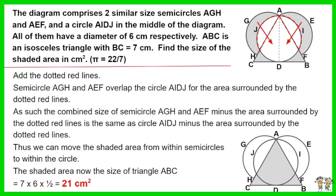Thus we can move the shaded area from within semicircles to within the circle. The shaded area now the size of triangle ABC equals seven times six times half. The answer is 21 centimeters squared.